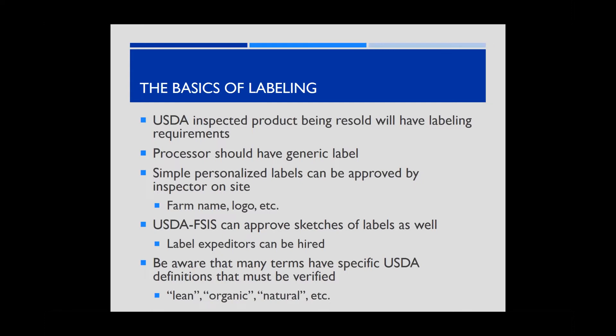Anything intended for resale must be labeled for resale with required information including the processor's inspection seal. Customized labels with a farm name or logo are good for branding and can be approved by the on-site inspector under generic approval if they're simple. However, adding a farm location constitutes an origin claim requiring FSIS approval — a process Kenny learned firsthand when a label with a city name was held up. It took about two weeks but was approved.